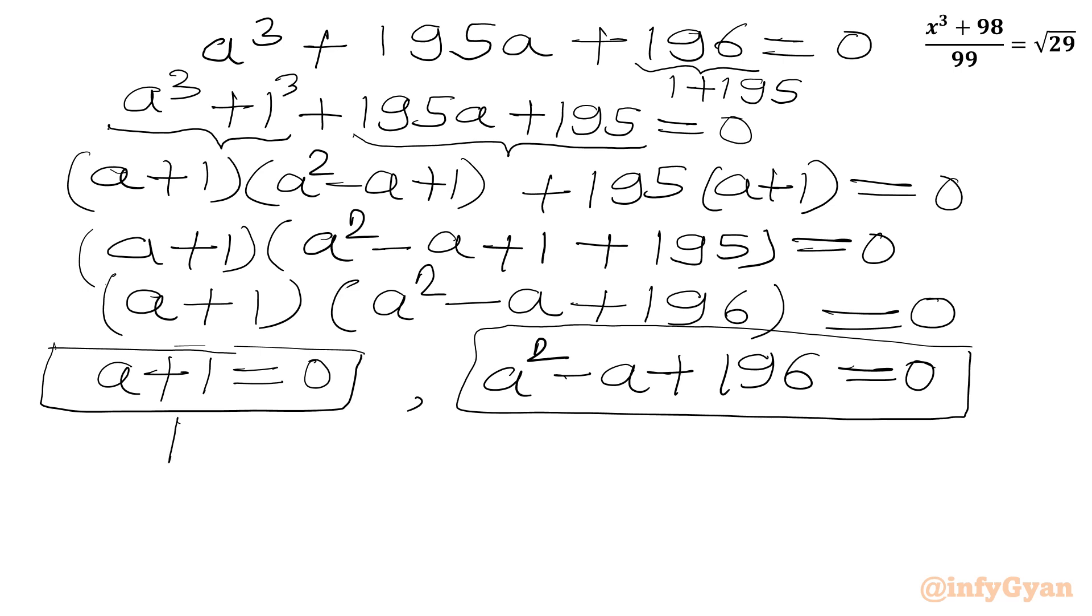So from here we will conclude either a plus 1 will be 0, or this quadratic equation a squared minus a plus 196 equals 0. Now from the first equation we can write a equals negative 1, and a was our substitution x minus y. So x minus y equals negative 1.